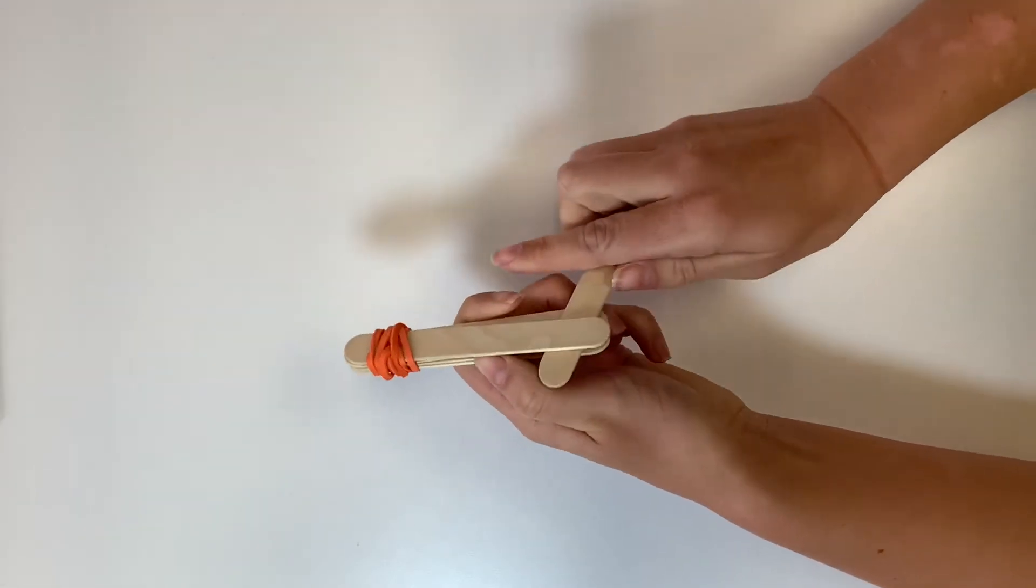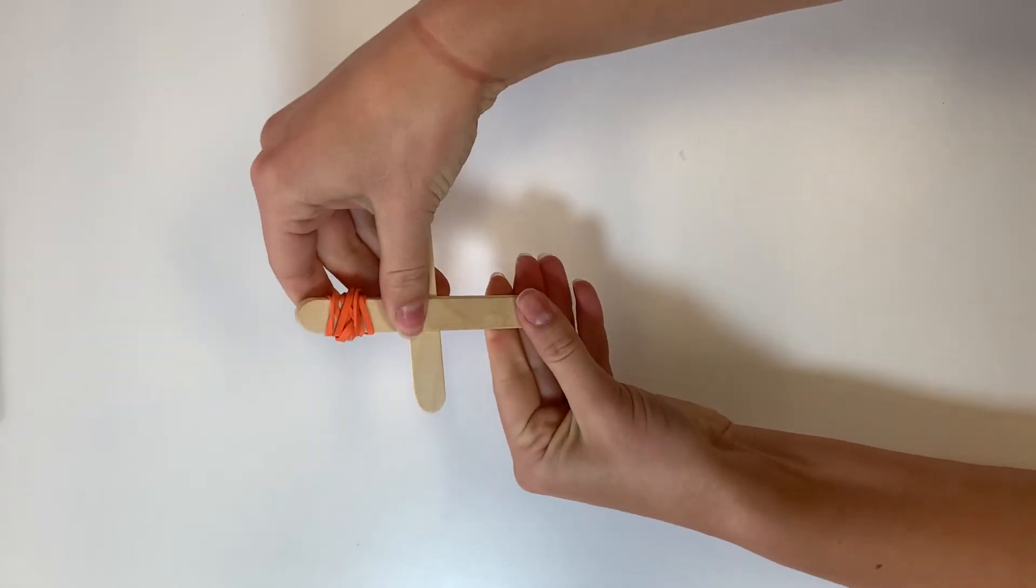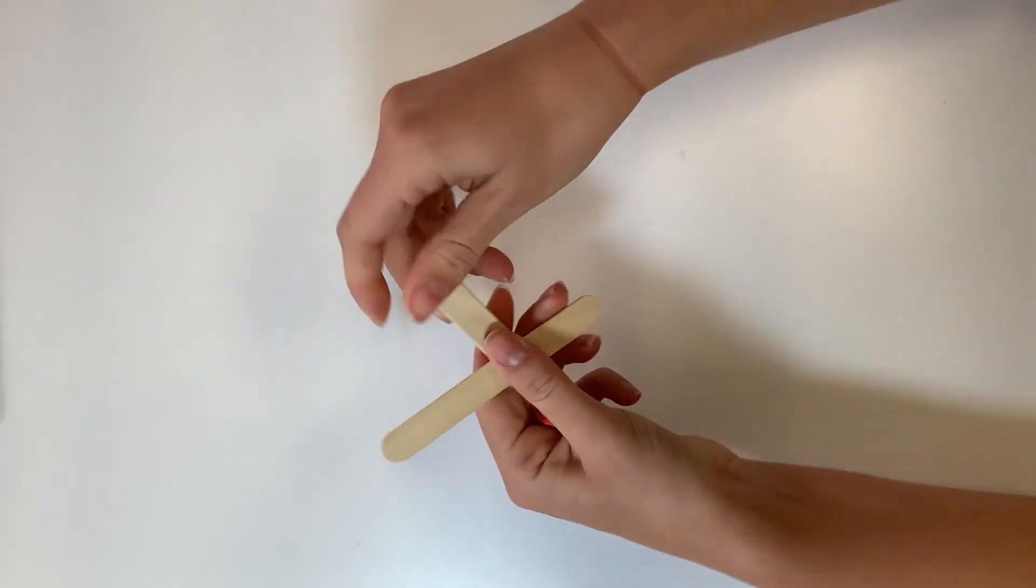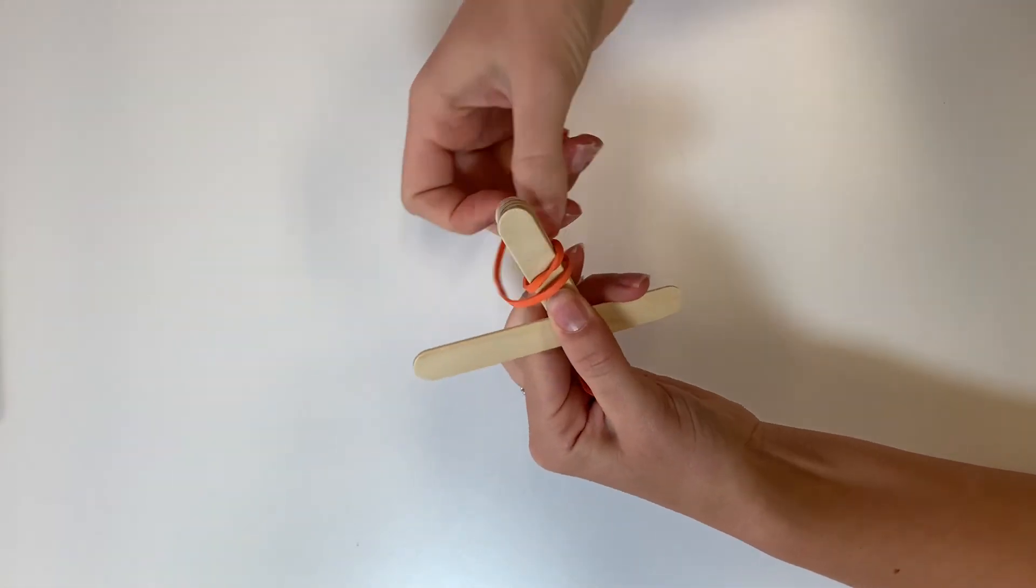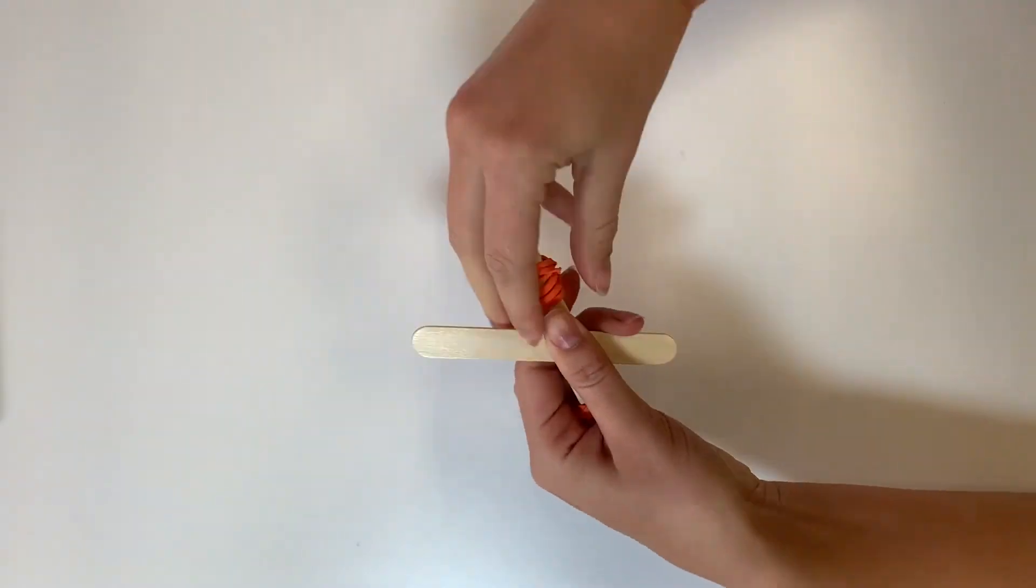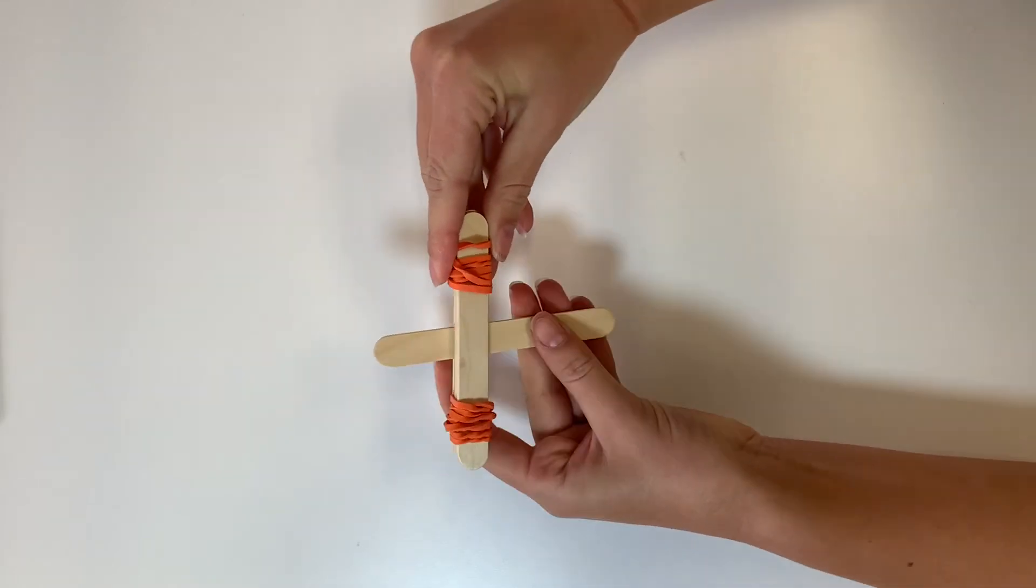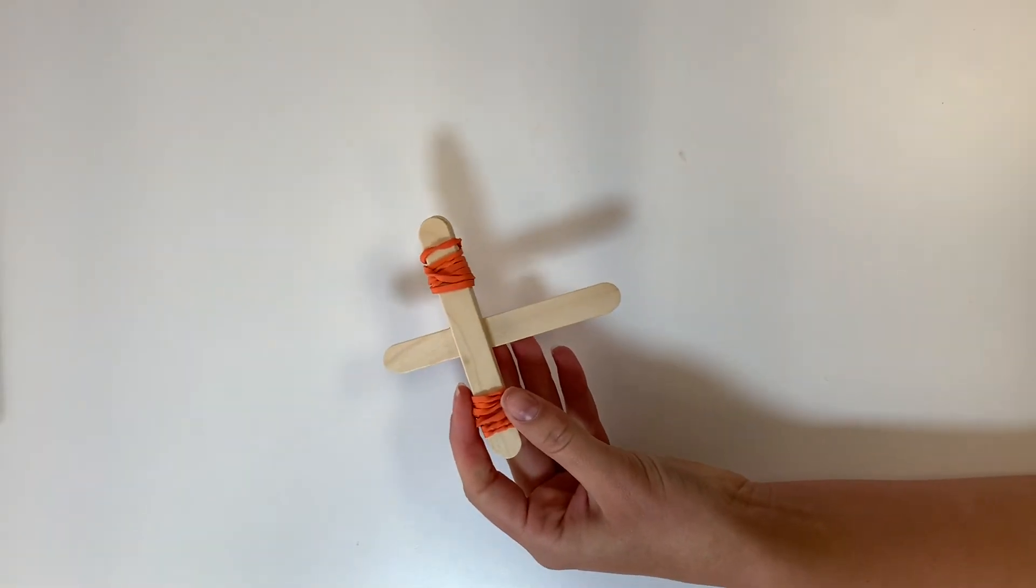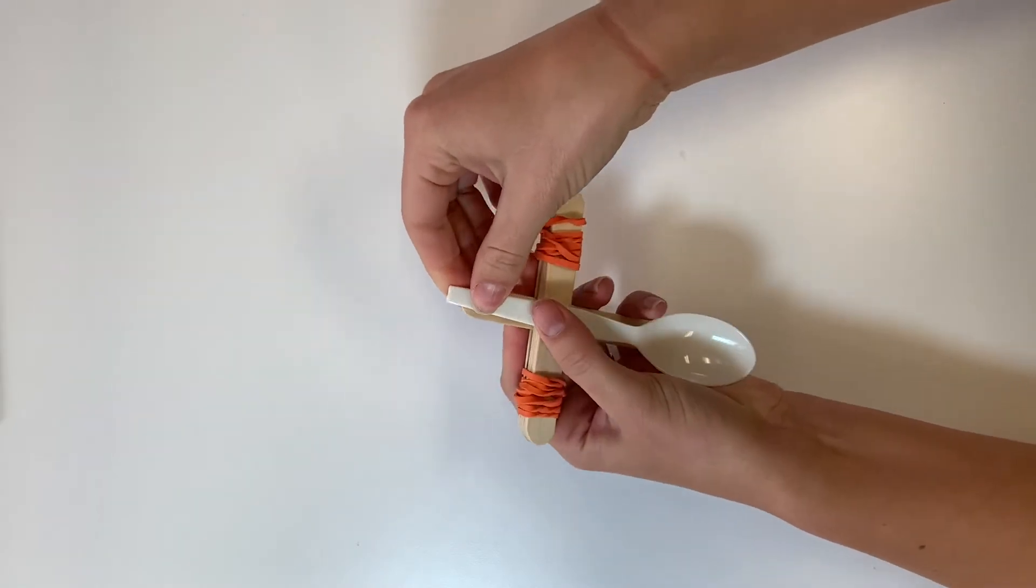Secure the other end with a rubber band. Place the spoon on top and attach the end of the spoon to the end of the single stick with the last rubber band.